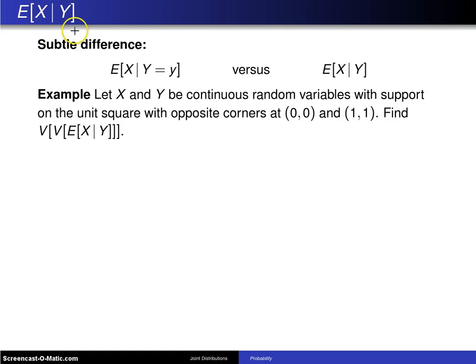There is a second type of conditional expected value, and this is the notation that is used: the expected value of X given Y. There is a subtle difference here between the following.